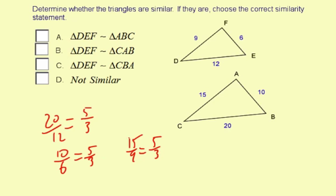So the ratios are all the same, so by side, side, side similarity, we can say the triangles are similar.